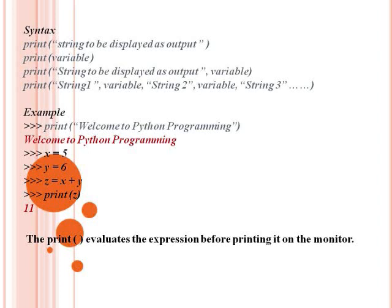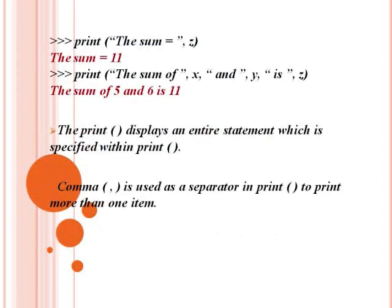Third method example: print within quotes — 'the sum is equal to', then a variable. So output variable Z gives us the message: the sum is equal to 11.